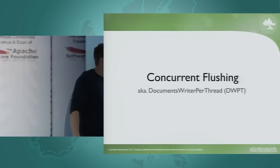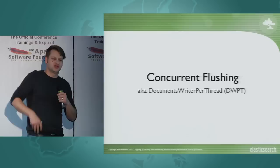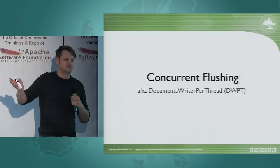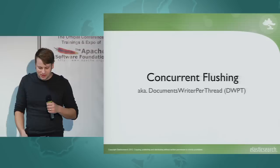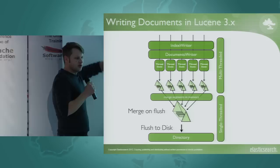Concurrent flushing. Who uses Lucene, Solr, Elasticsearch, or anything, and has ever encountered a situation where you're indexing and suddenly the number of documents per second drops to zero? Do you know why this happened? A flush. Correct. In Lucene until version 3, this was roughly how the index writer worked.